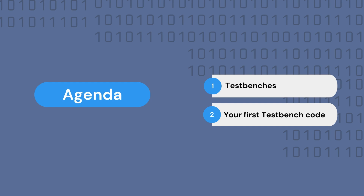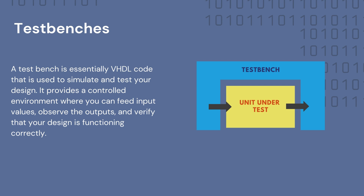As we've briefly discussed in our previous video, VHDL, or Very High-Speed Integrated Circuit Hardware Description Language, is a powerful tool for designing and implementing digital circuits. However, to ensure that your VHDL code is working as intended, it's really important to create thorough test benches. A test bench is essentially VHDL code that is used to simulate and test your design. It provides a controlled environment where you can feed input values, observe the outputs, and verify that your design is functioning correctly.